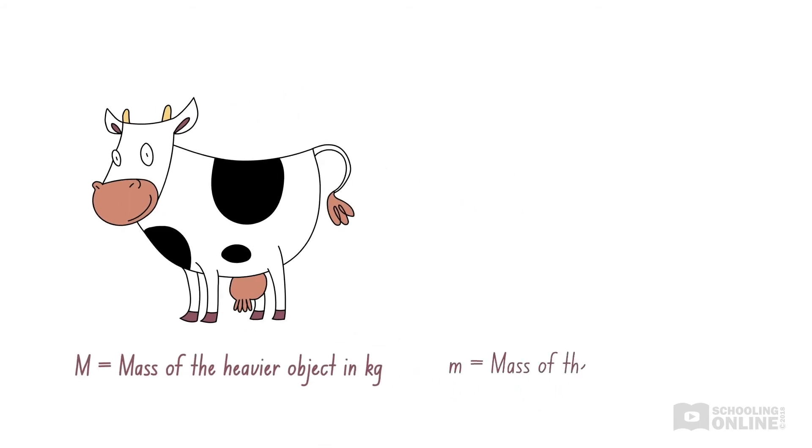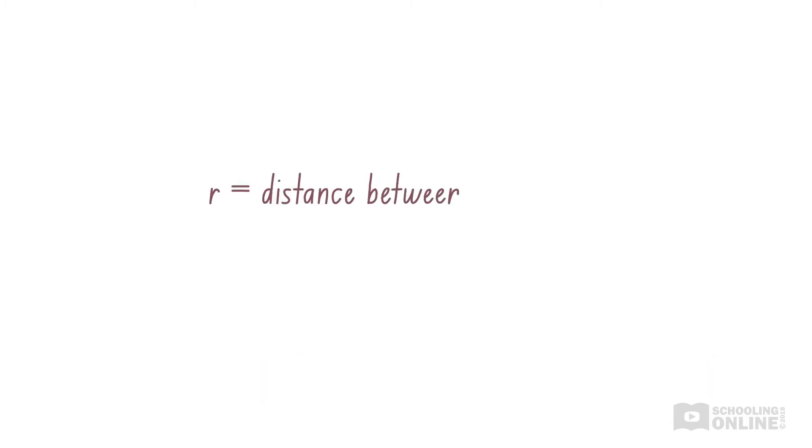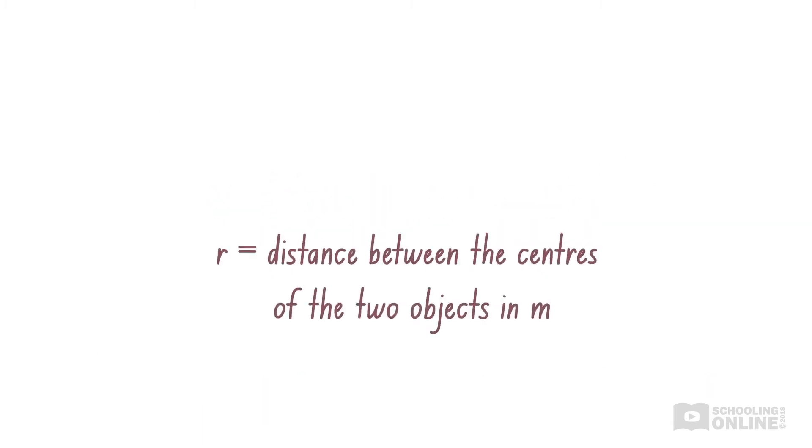Lowercase m is the mass of the lighter object in kilograms. And r is the distance between the centres of the two objects in metres.